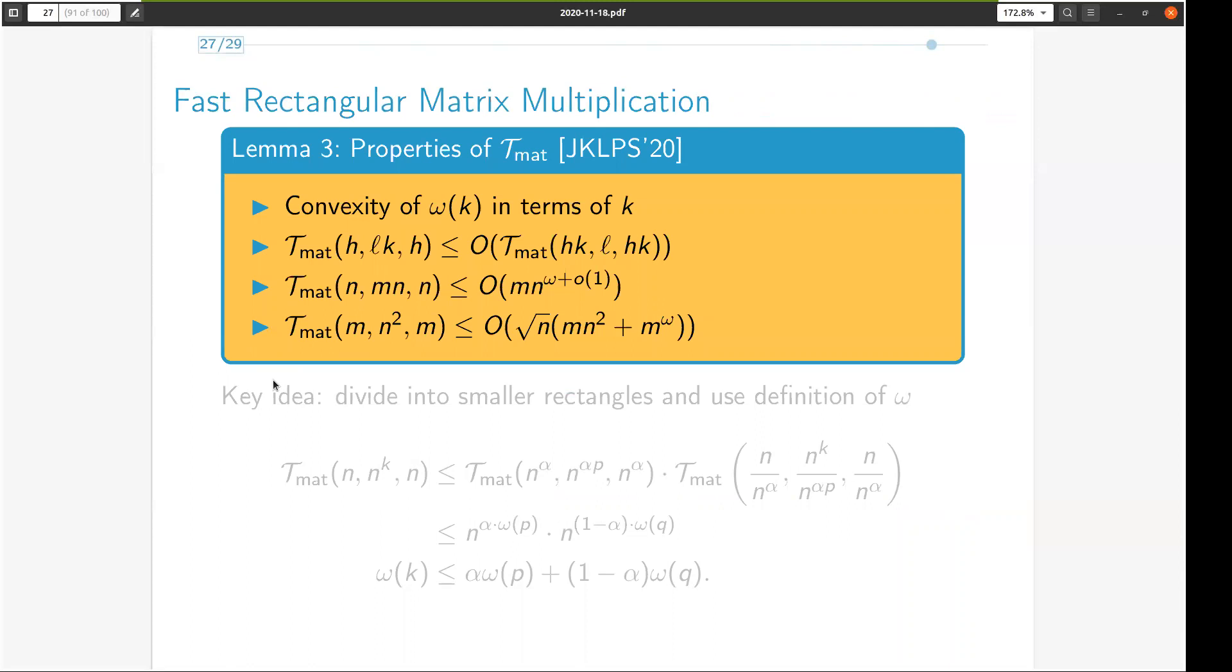Finally, a word about fast rectangular matrix multiplication. We use several properties of tmat in this paper that are finally used in simplifying the runtimes in terms of tmat. The key ideas in proving these results are to divide the matrices being multiplied into smaller sub rectangles, and applying the definition of omega recursively. Here's an example of one such proof wherein we show that the function omega is in fact convex in its argument. We remark that this particular fact was known earlier, but our goal here is to demonstrate the flavor of proofs we use in this section.